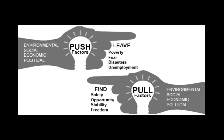The traditional model for understanding migration is what is called push and pull factors. This means first what happened internally in countries that pushed people to leave their homeland, and second what was happening in other parts of the world that pulled people to come to the recipient countries. That model is a great way to think about why people would leave their places of origin.